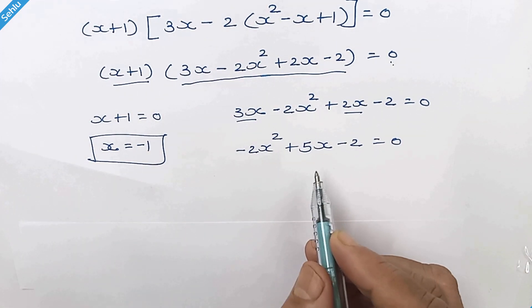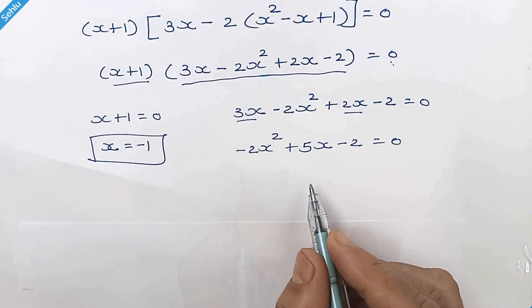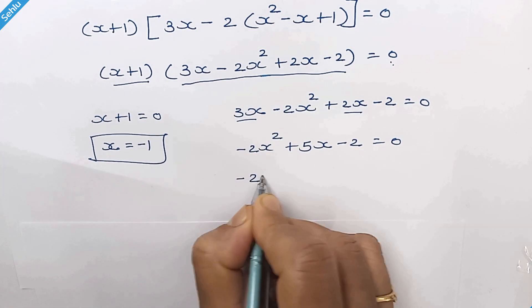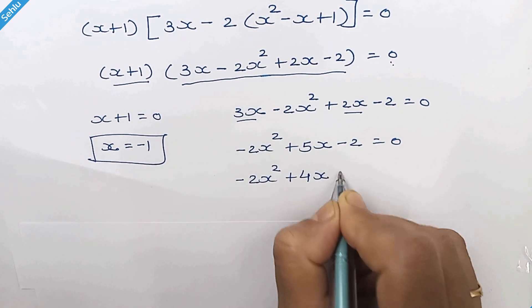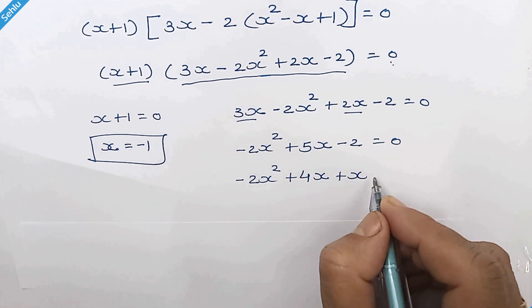Now it's a quadratic equation and we can factorize it by placing 4x plus x instead of 5x.